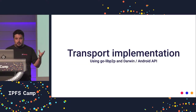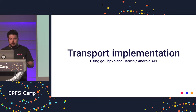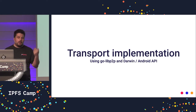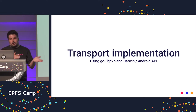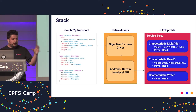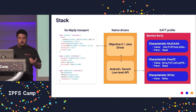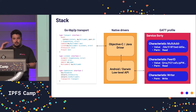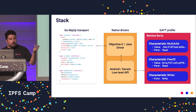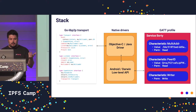Let's talk about the transport implementation. We are using the Go version of LibP2P, and for now we have only two native drivers: one for Darwin — so iOS and macOS — and the other one for Android. This is our stack. We implemented the common interfaces of Go LibP2P, so we have a transport, a listener, and a capable connection. This part talks with the native driver, written in Objective-C and Java.